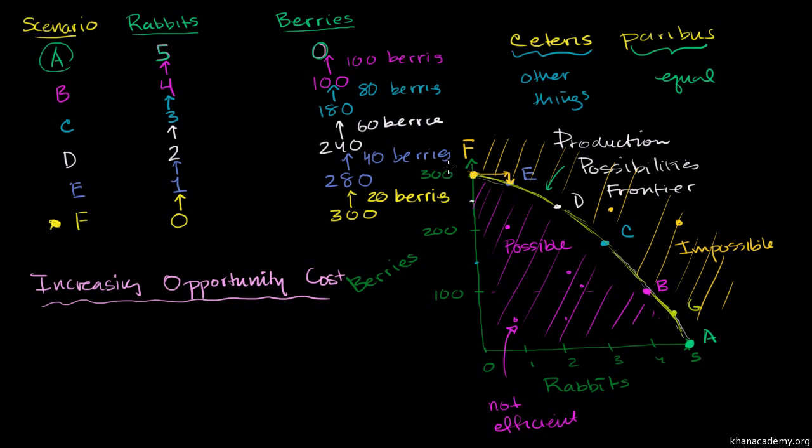Or another way to think about it, in scenario F, the slope is roughly like this. And I encourage you to review the algebra playlist if the idea of slope is confusing to you. But at F, the slope is like that. I'm drawing the slope of the tangent line right over here.